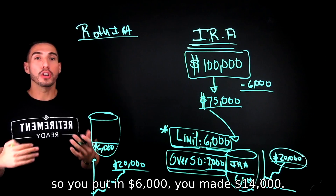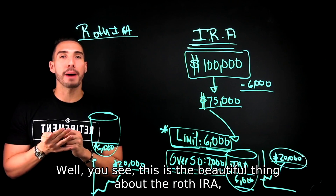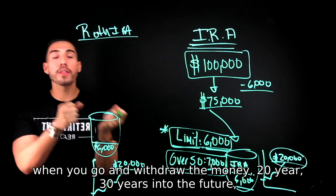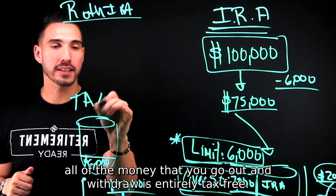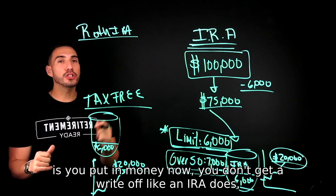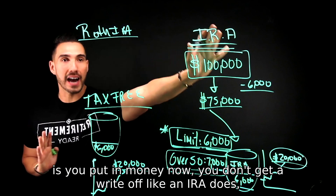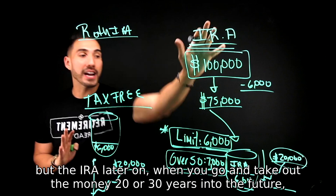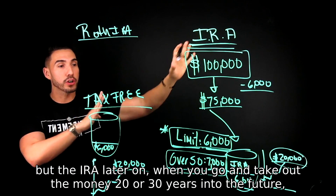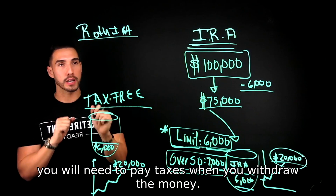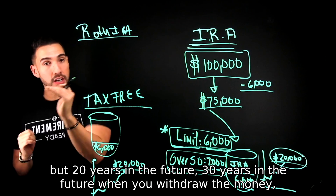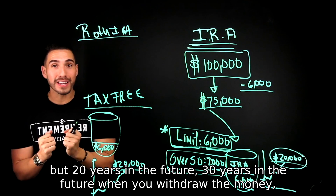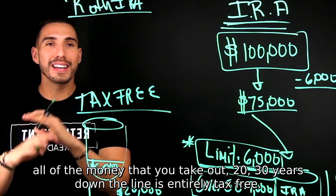You put in $6,000 and made $14,000. Here's the beautiful thing about the Roth IRA: when you go and withdraw the money 20 or 30 years into the future, all of the money you withdraw is entirely tax free. So the key difference is: a traditional IRA gives you the write-off this year but you pay taxes when you withdraw later. With a Roth IRA, you put in $6,000 now with no write-off, but when you withdraw 20 or 30 years down the line, all of it is entirely tax free.